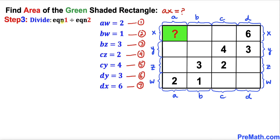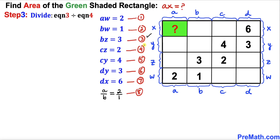Based on these equations we will find the value of ax. Dividing equation 1 by equation 2: aw divided by bw equals 2 over 1. The w's cancel, giving us a over b equals 2 over 1 — call this equation 8. Dividing equation 3 by equation 4: bz divided by cz equals 3 over 2. The z's cancel, giving b over c equals 3 over 2 — call this equation 9.